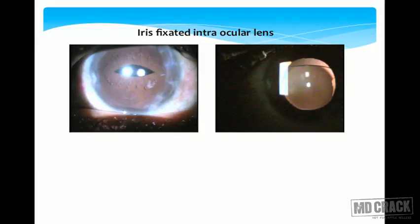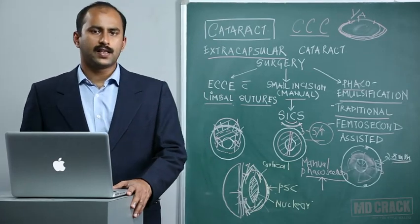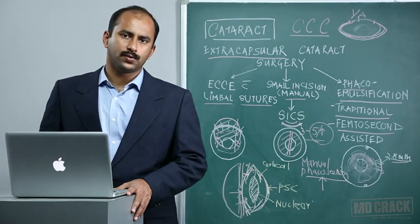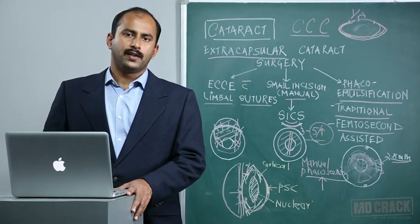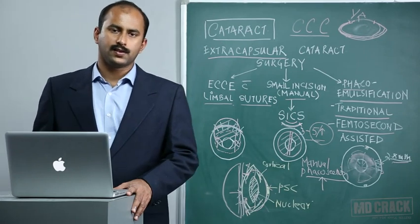In iris-fixated intraocular lenses, inclavation of the iris and ovalization of the pupil can be seen where the lens pinches the iris stroma; on dilation the pupil dilates to circular, revealing the claws of the lens. These lenses are not the primary choice but can be used in complicated cases with good results. With modern technology, incision sizes in cataract surgery have been reduced, improving visual outcomes from day one post-surgery. Reducing incision sizes and increasing precision using femtosecond laser cataract surgery appears to be the trend for the future.